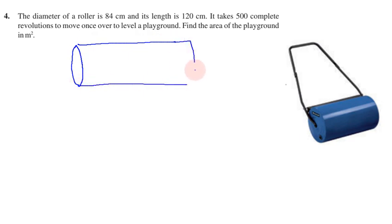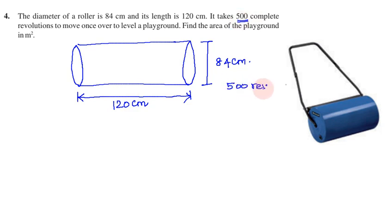Diameter is 84 cm. The roller is a cylindrical shape, so this is 84 cm and the roller is 120 cm. So the roller is 120 cm. The roller takes 500 revolutions, rotates to move once over to level your playground.